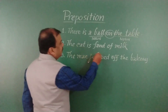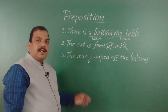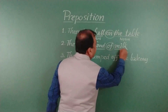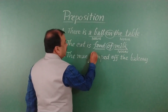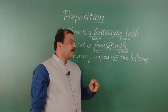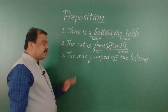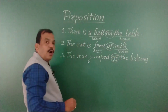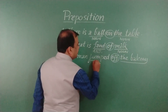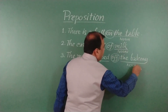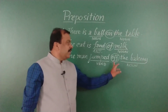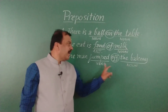In example number two, 'of' is the preposition. It builds the relationship between 'fond' and 'milk' — milk is a noun and fond is an adjective — so sometimes a preposition builds the relationship between an adjective and a noun. In sentence number three, the preposition is 'off,' and it builds the relationship between 'balcony' and 'jumped' — balcony is a noun and jumped is a verb — so here it builds the relationship between a noun and a verb.